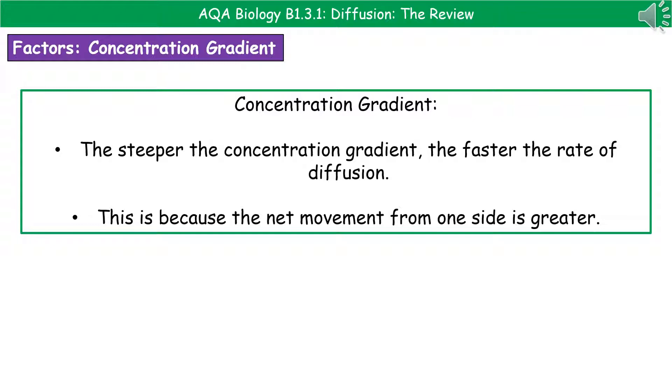Our second factor is the concentration gradient. And the pattern that we see here is that the steeper the concentration gradient, so the greater the difference between the high and the low, then the faster the rate of diffusion. And the reason for that is because the net movement from one side to the other is greater.